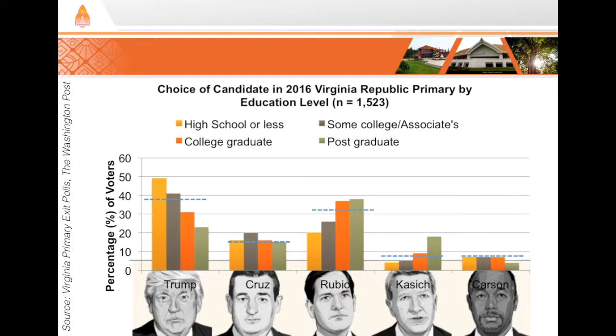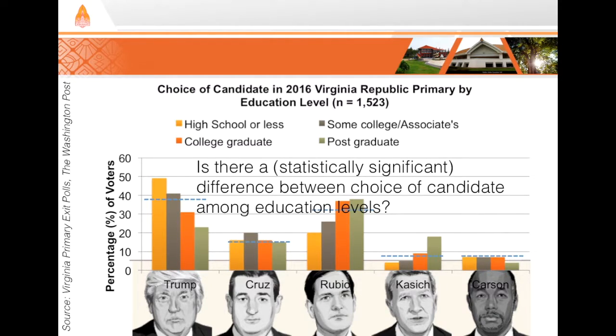With inferential statistics, we can try to answer the question: is the choice of candidate different among the education levels? To answer that question, we have to calculate those dreaded p-values. It turns out that for Trump, Rubio, and Kasich, our so-called p-value is low, which allows us to say that the differences in voter choice among education levels is probably not due to random chance or sampling variability. The difference that we see in our sample may in fact be something that's real in the overall population. That activity there is in a field called hypothesis testing, and we'll cover those concepts in parts D through G.